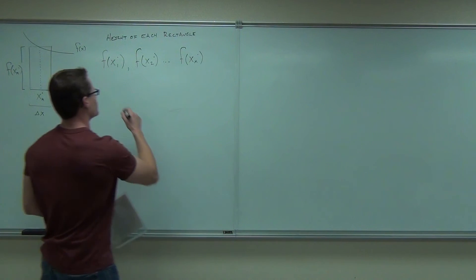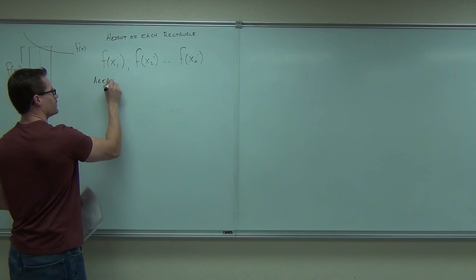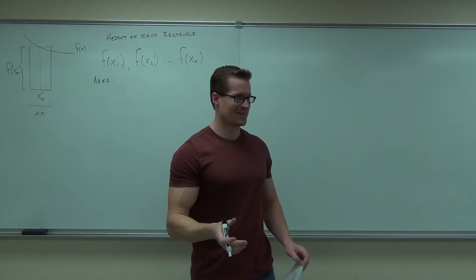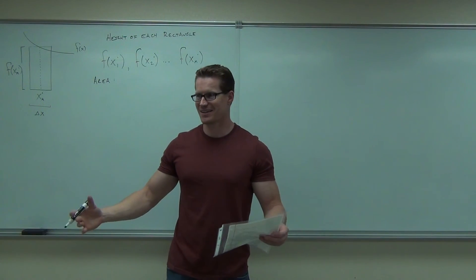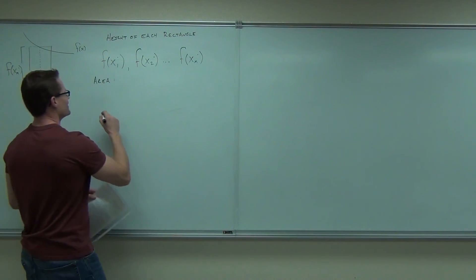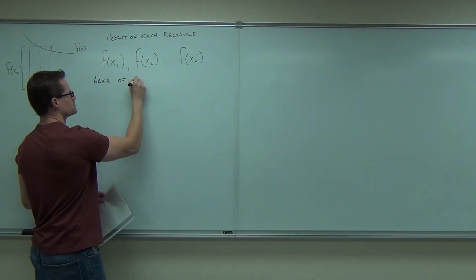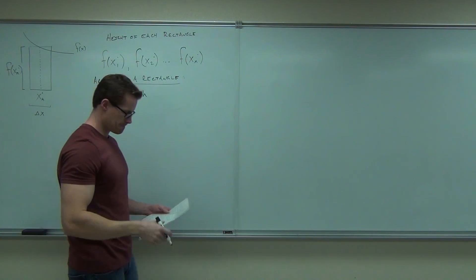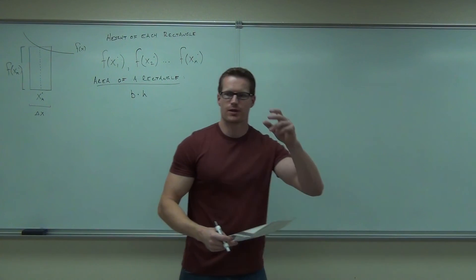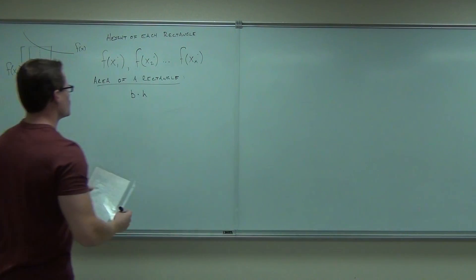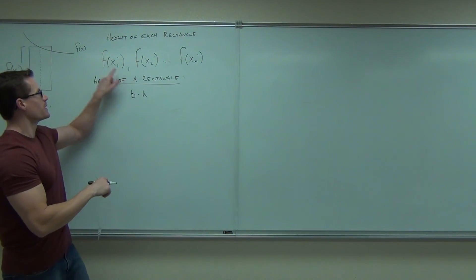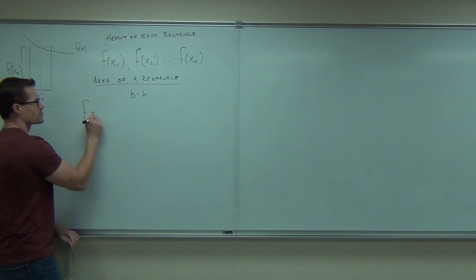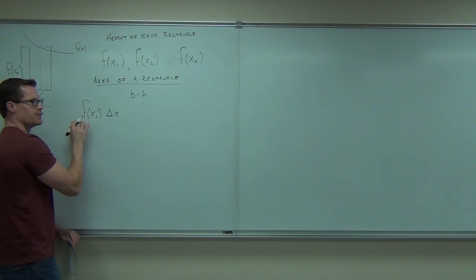Now the fun part — everything's going to make sense. The area of a rectangle is base times height. For each rectangle, the base is delta X and the height is f of x sub k dot. So the area of the first rectangle would be f of x₁* times delta X. This is the area of the first rectangle.